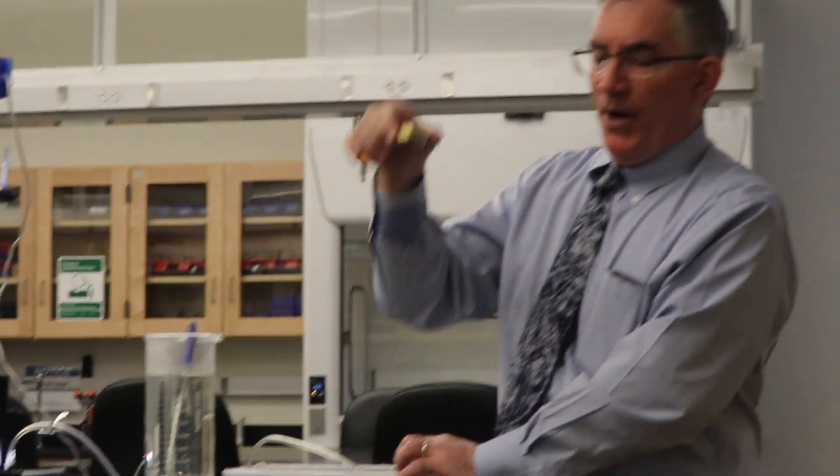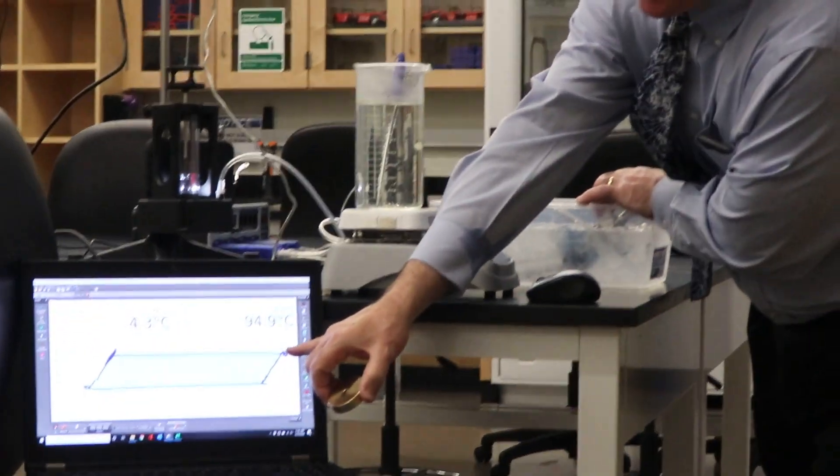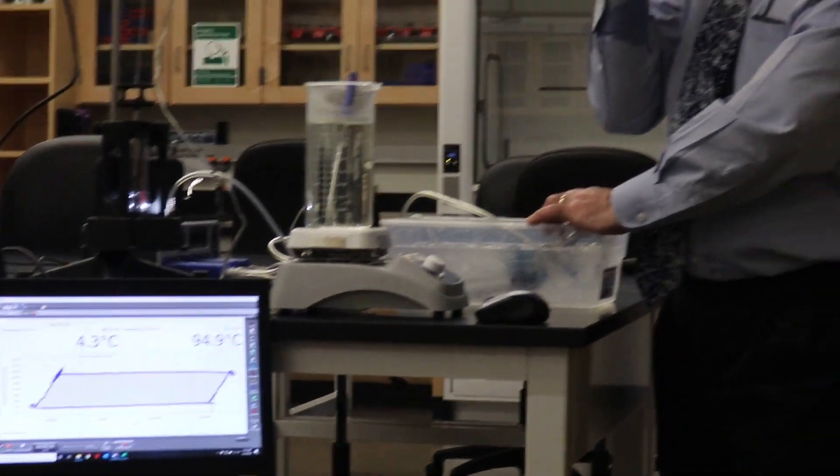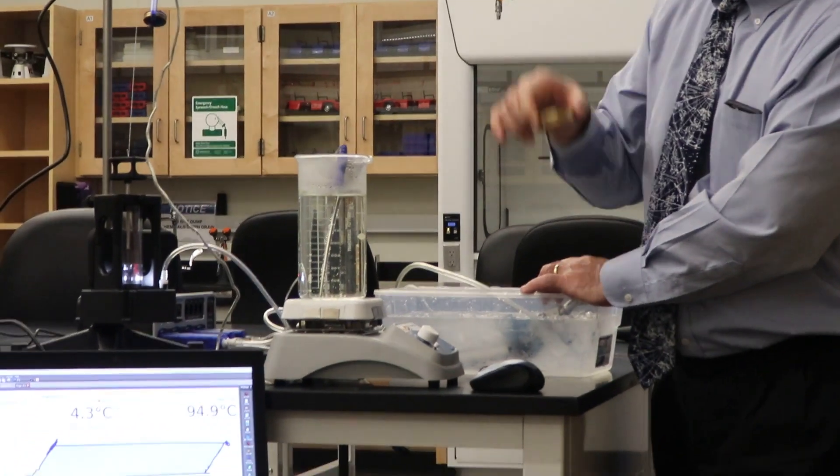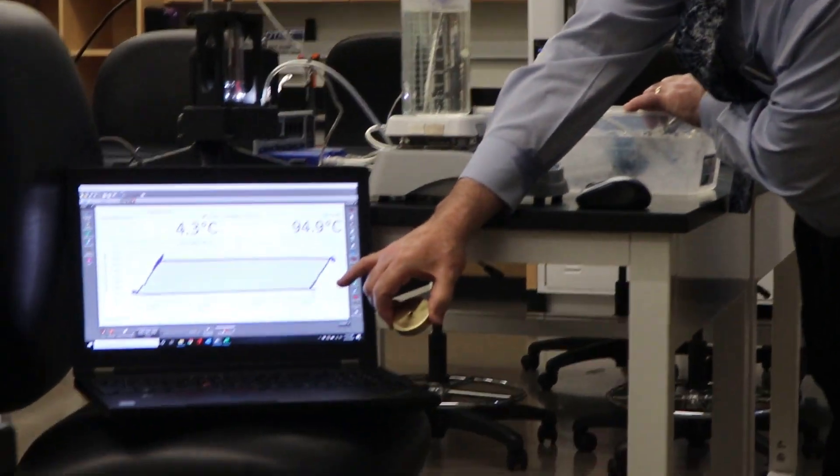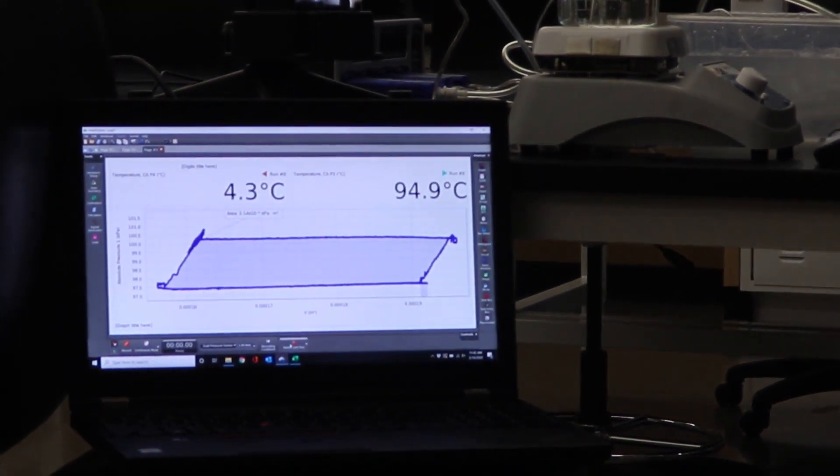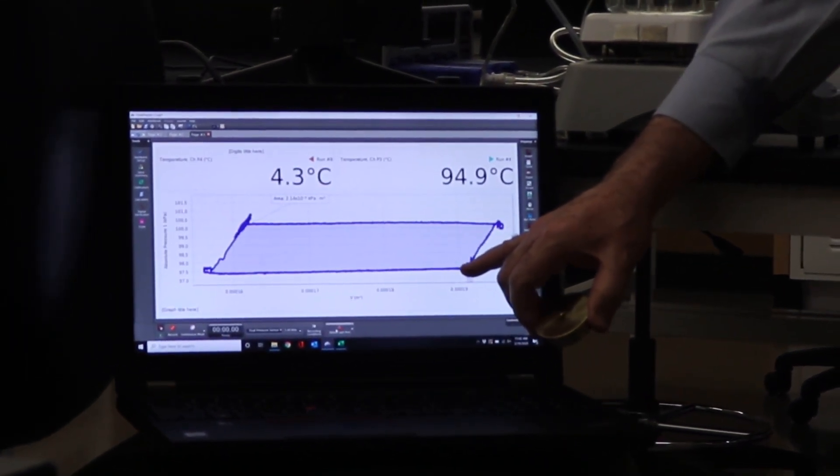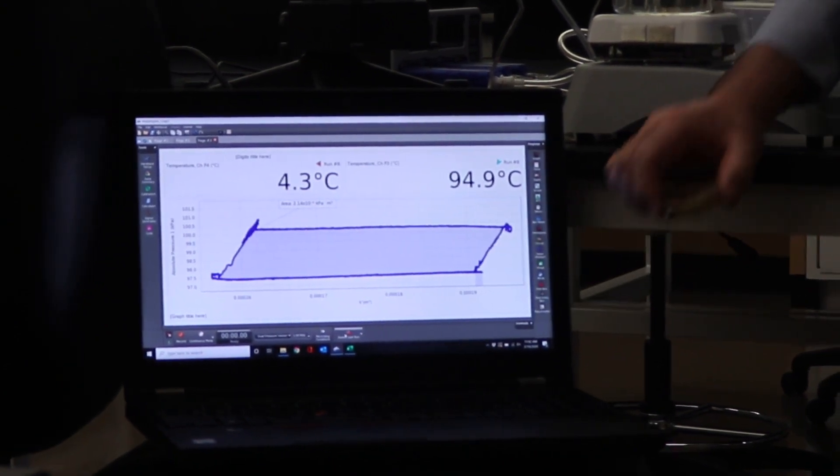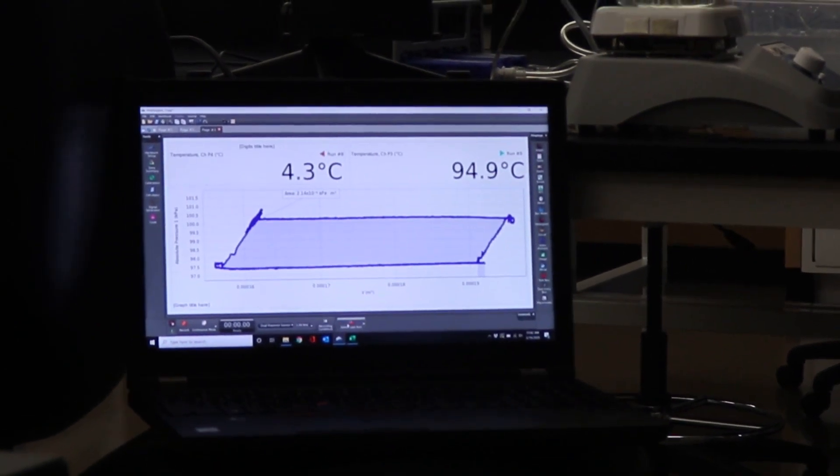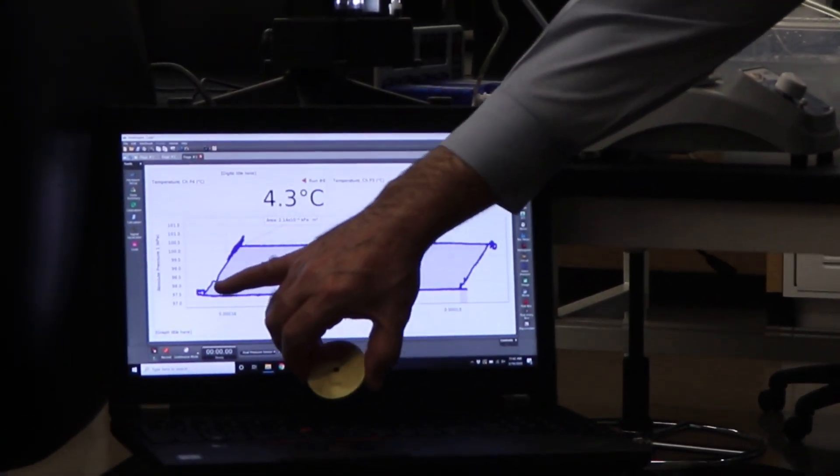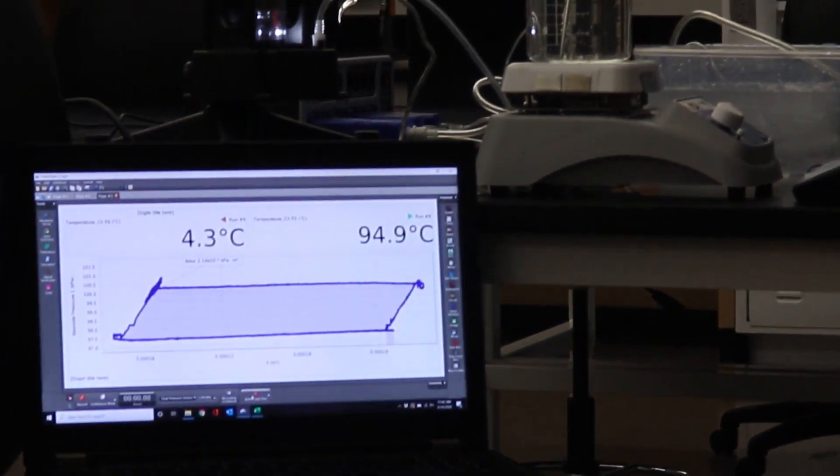Once it reaches the highest point, we're up here at this corner right here, then I'm going to take the weight out. Since the weight isn't on there anymore, we're down in this corner right here when I take the weight off. Then I'm going to transfer it back to the cold reservoir and it'll return it back to the original point way over there on the left.